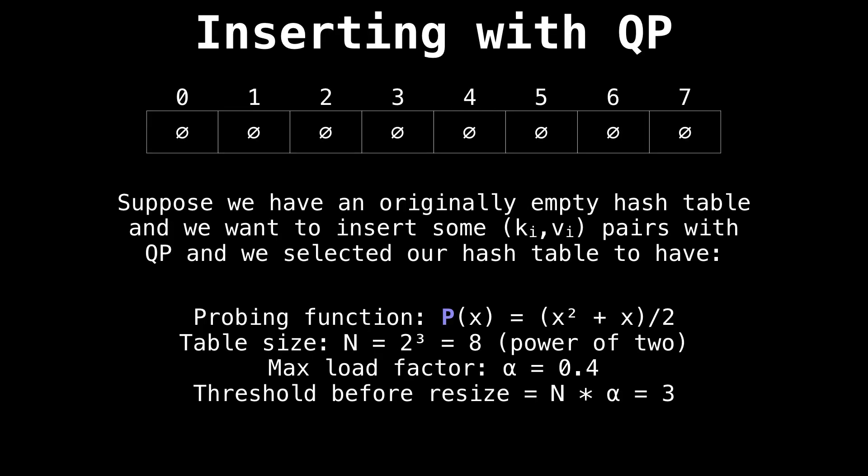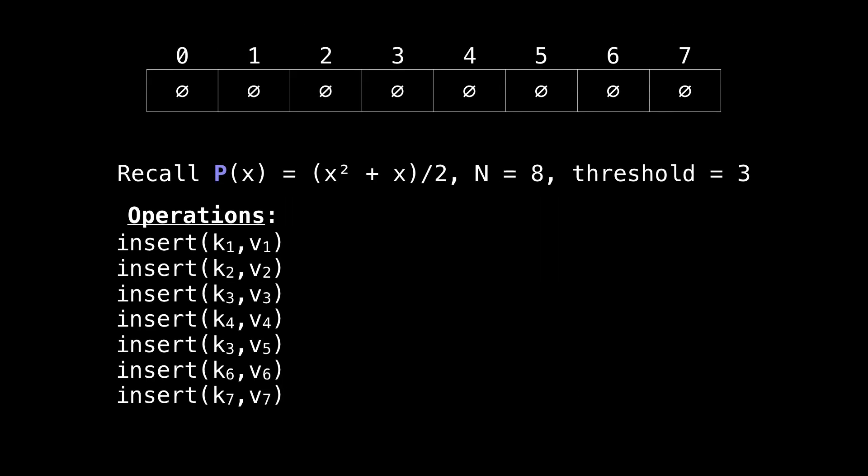Alright, suppose we have an initially empty hash table, and we want to insert some key value pairs using the quadratic probing function P(x) = (x² + x)/2, and the table size is a power of 2, so it's 8. Let's select the load factor to be 0.4, therefore the table threshold is going to be 3. Just to emphasize, the table size must absolutely be a power of 2, otherwise this will not work.